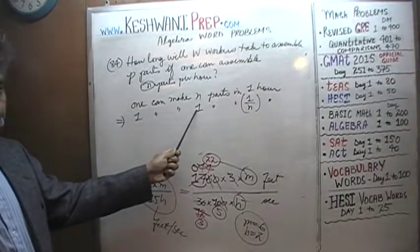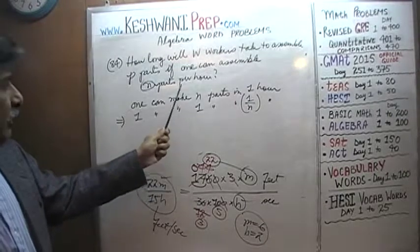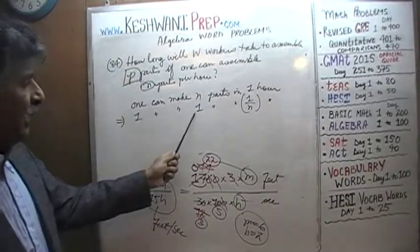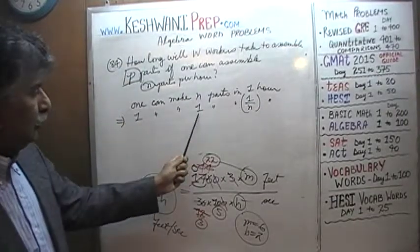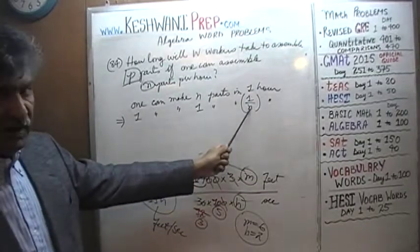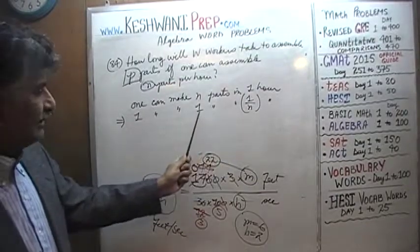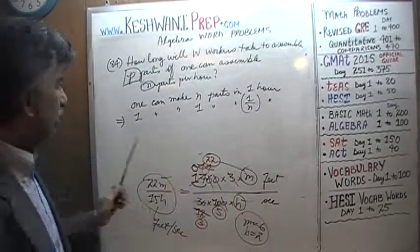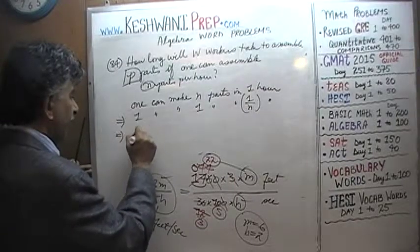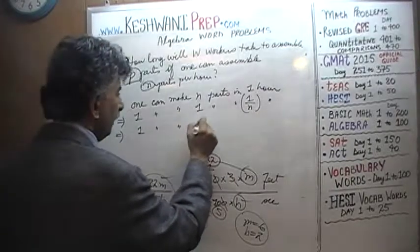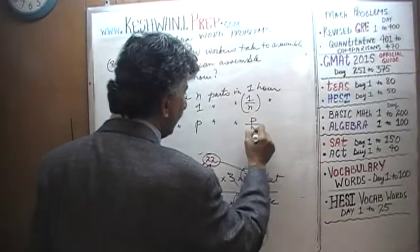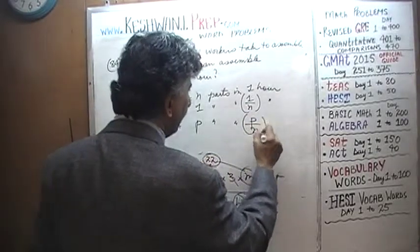We don't want to make just one part — we want to make p parts. If one part takes 1/n hours, then two parts take twice as long, three parts take three times as long, and p parts take p times as long. So one worker can make p parts in p/n hours.